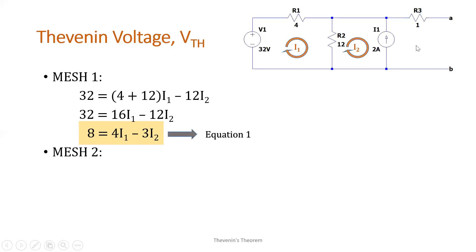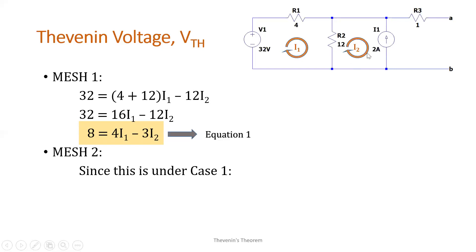For mesh 2, we have a current source of 2 amperes. For mesh analysis involving current sources, it can fall under case 1 or case 2. In this case, it is case 1 — the current source is affecting only one mesh, specifically mesh 2. So automatically, the magnitude equals the value of the current source. But the direction is going this way, so it is negative 2 amperes. Now we have a value for I2.